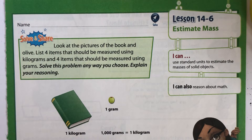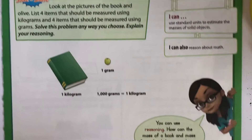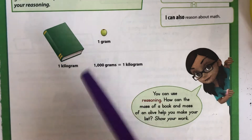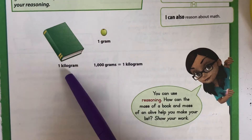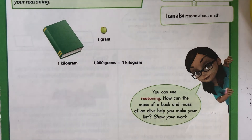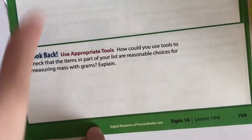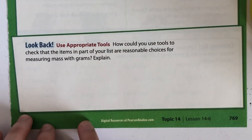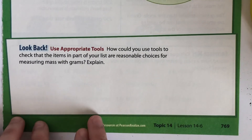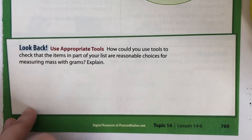Solve this problem any way you choose and explain your reasoning. Figure out what you would measure in grams and what you would measure in kilograms. How can the mass of a book and the mass of an olive help you make your list? On the bottom it says: how could you use tools to check that the items on your list are reasonable choices for measuring mass in grams?